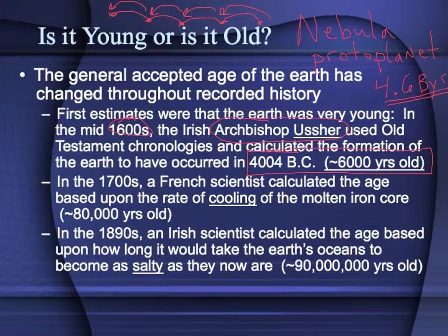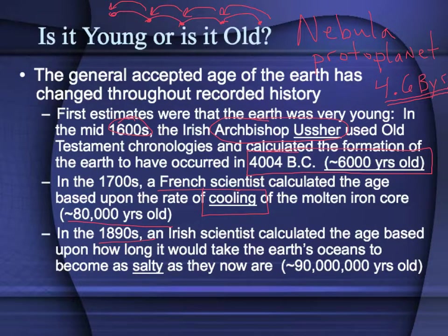Shortly after that, especially after the Scientific Revolution, scientists came along and used scientific methods to try to determine the age of the Earth using observational, empirical methodology. A French scientist tried to calculate the age based upon the rate of cooling and estimated the Earth was 80,000 years old — originally a giant molten ball of iron. In the 1890s, an Irish scientist tried to calculate the age based on how long it would take the Earth's oceans to become salty, assuming they started as fresh water, and came up with an estimate of 90 million years old.